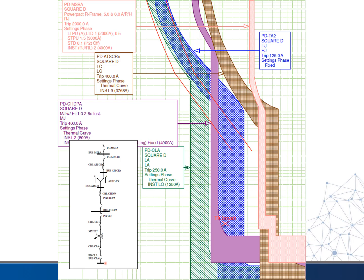You can have multiple branches throughout your system, which makes these studies time-consuming because you have to keep picking all these different pathways. Anywhere there's a breaker, the curve for that breaker is shown — for instance, PDMSBA is the pink one, PDCHDPA is the purple one, and PDCLA is the green one. The idea is that as we come down through the system, the curves would come down in order. So PDCLA, being the closest to the load, is the furthest to the left. But moving to the right, we can see a couple of problems.